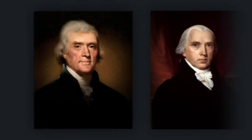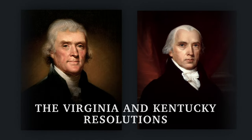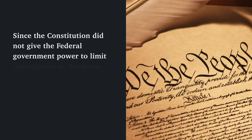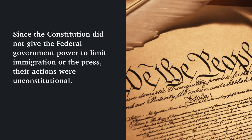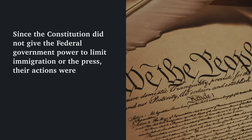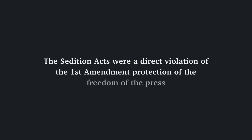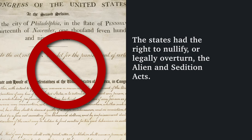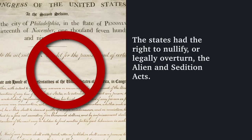In response to the Alien and Sedition Acts, Jefferson and James Madison, another prominent Democratic-Republican, wrote the Virginia and Kentucky Resolutions. These argued that the government's power was limited to only what the Constitution said it could do. Since the Constitution did not give the federal government power to limit immigration or the press, their actions were unconstitutional. The Sedition Acts were a direct violation of the First Amendment protection of freedom of the press. And since the Alien and Sedition Acts were unconstitutional, the states had the right to nullify or legally overturn them.